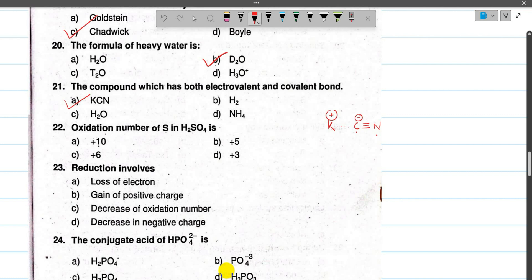Number 21: the compound which has both electrovalent and covalent bonds is potassium cyanide KCN. Between potassium and cyanide is electrovalent, between carbon and nitrogen is covalent. Number 22: the oxidation number of sulfur in H2SO4 is calculated from overall compound oxidation number equals zero. Hydrogen is +1, oxygen is -2. So 2(+1) + S + 4(-2) = 0, therefore sulfur oxidation state is +6.